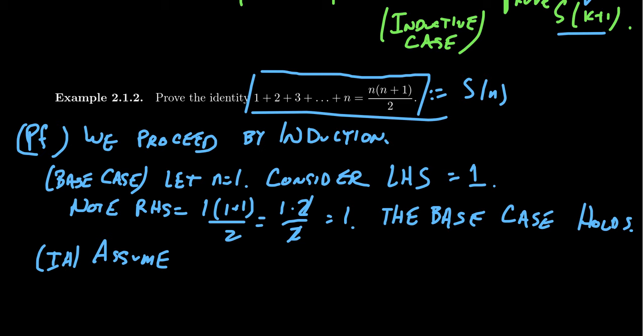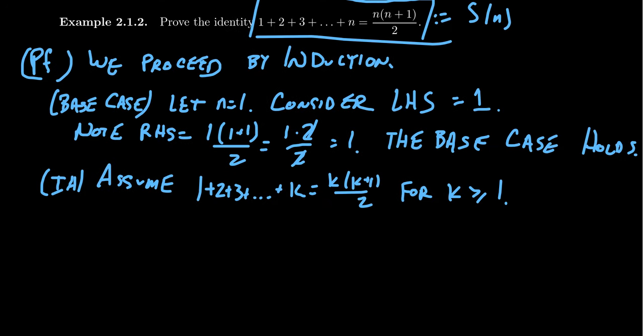So for the inductive hypothesis, we're going to assume that 1 plus 2 plus 3 all the way up to k equals k times (k+1) over 2 for k greater than or equal to 1. That's what we're going to assume here. So the inductive hypothesis is just an assumption. We're assuming it's true.